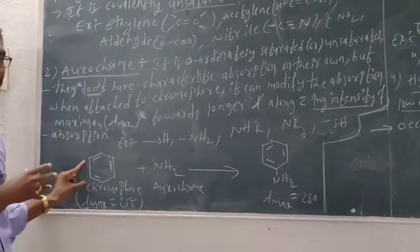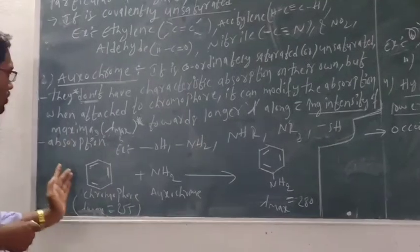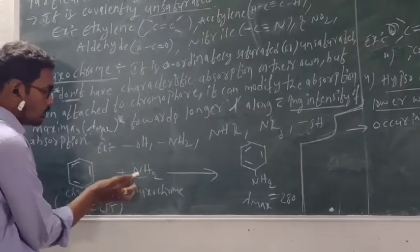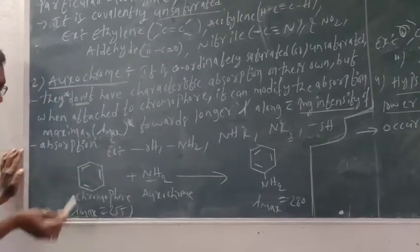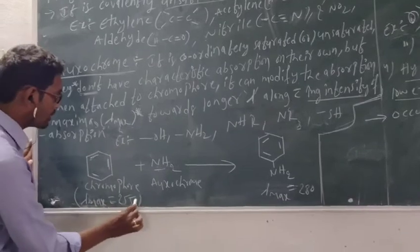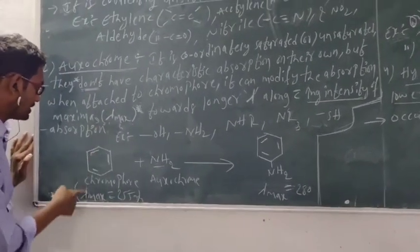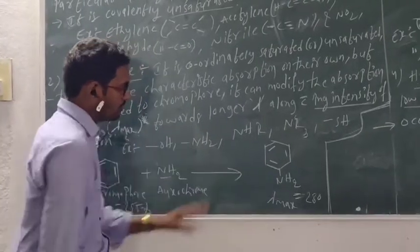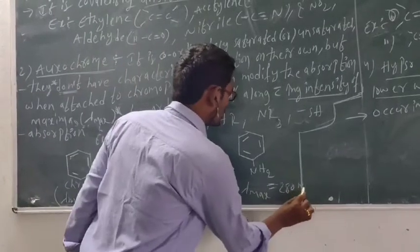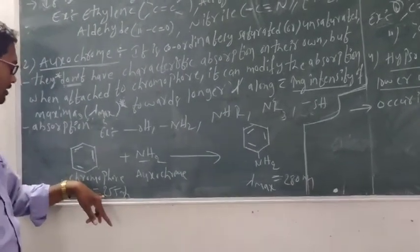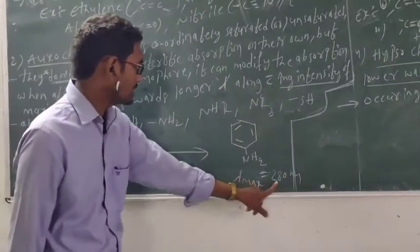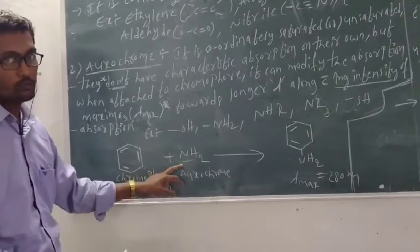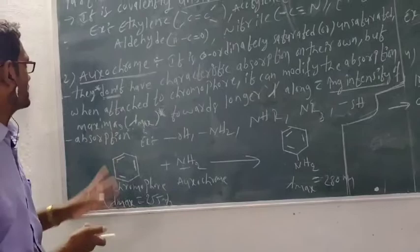Let me explain how an auxochrome increases the lambda max of a chromophore. Here, benzene is the chromophore — it contains pi electrons from double bonds. The lambda max of benzene is 255 nanometers. Now suppose we add an auxochrome, which is -NH2 (aniline). The lambda max becomes 280 nanometers. You can see that after adding the auxochrome, lambda max increased from 255 to 280 nanometers. That is the concept of auxochrome — adding any auxochrome to the chromophore increases the lambda max.